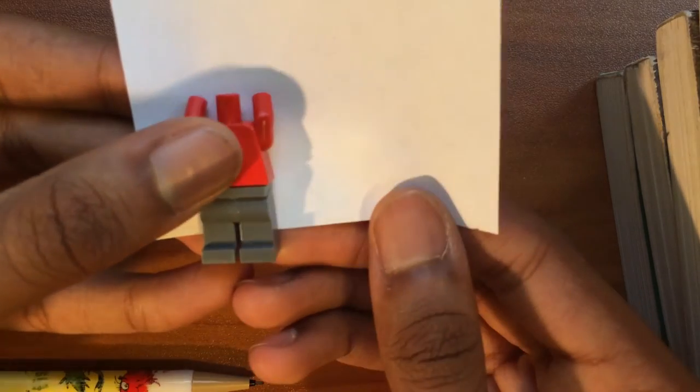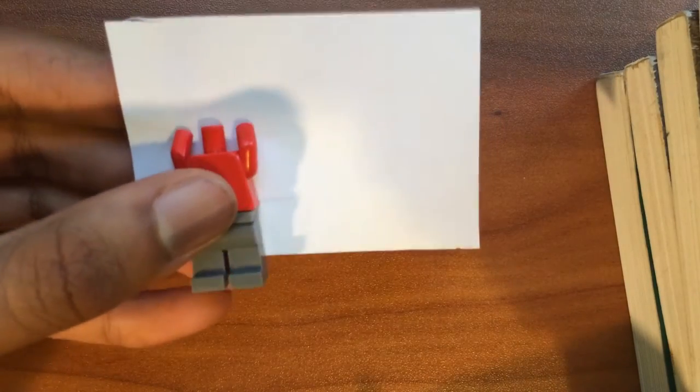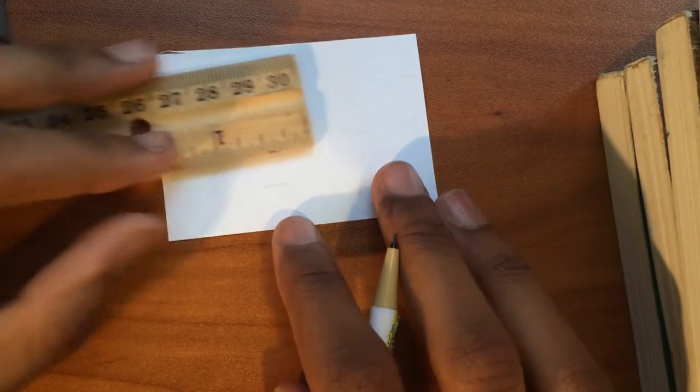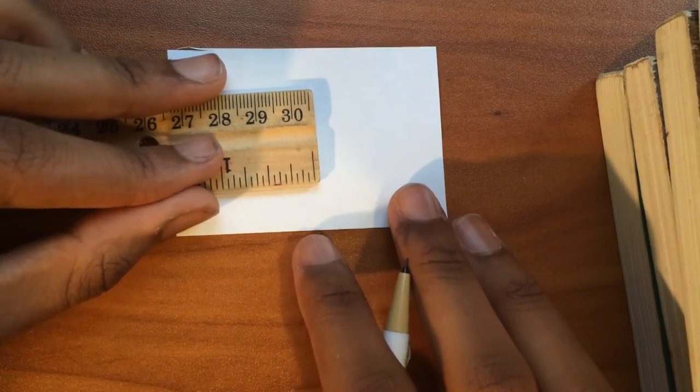Right there, if we measure, it's going to be about halfway down the Lego minifigure. So I'm just going to put like a little mark. Alright, so now what we want to do is I'm going to take our ruler at that mark that we made.